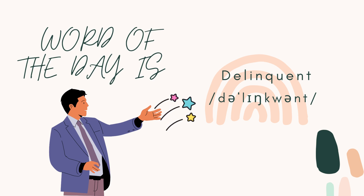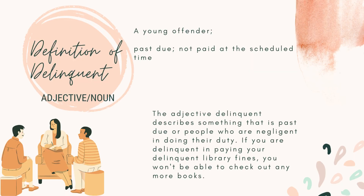Delinquent is an adjective and a noun. Definition of delinquent: a young offender; past due; not paid at the scheduled time. The adjective delinquent describes something that is past due or people who are negligent in doing their duty.